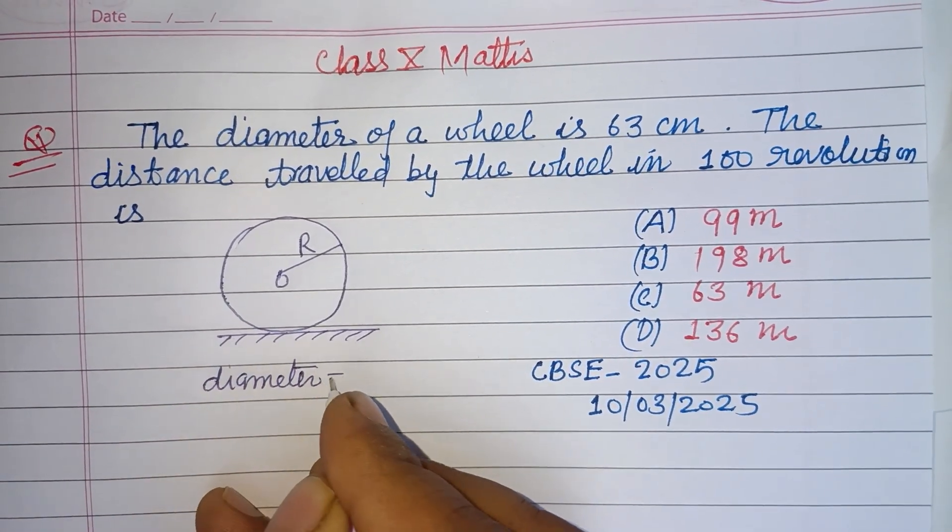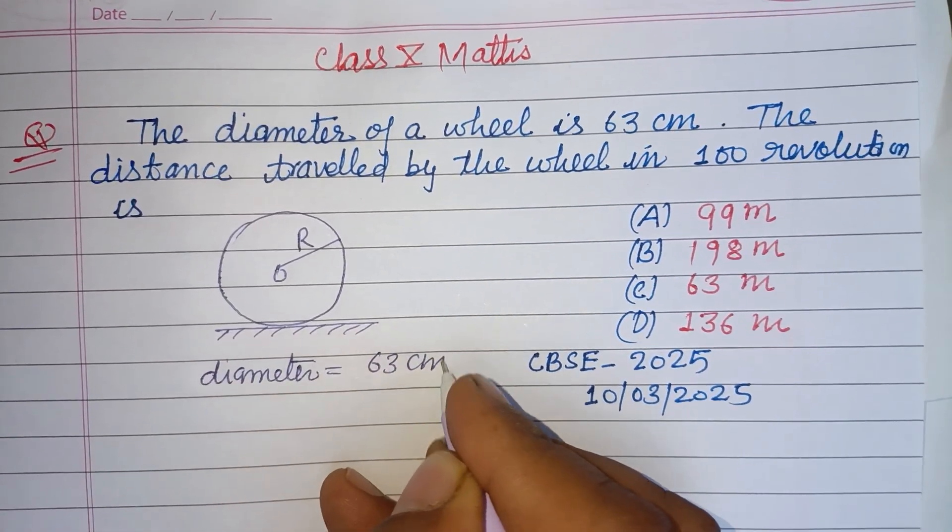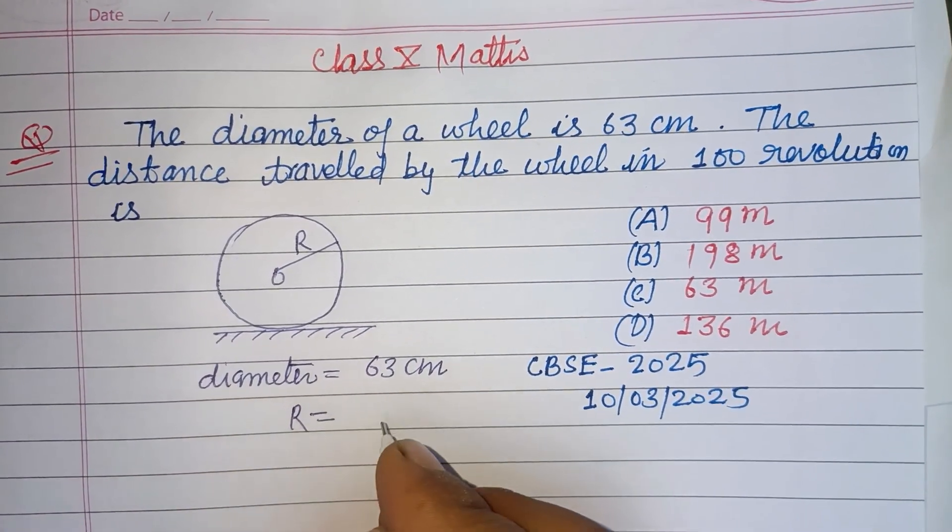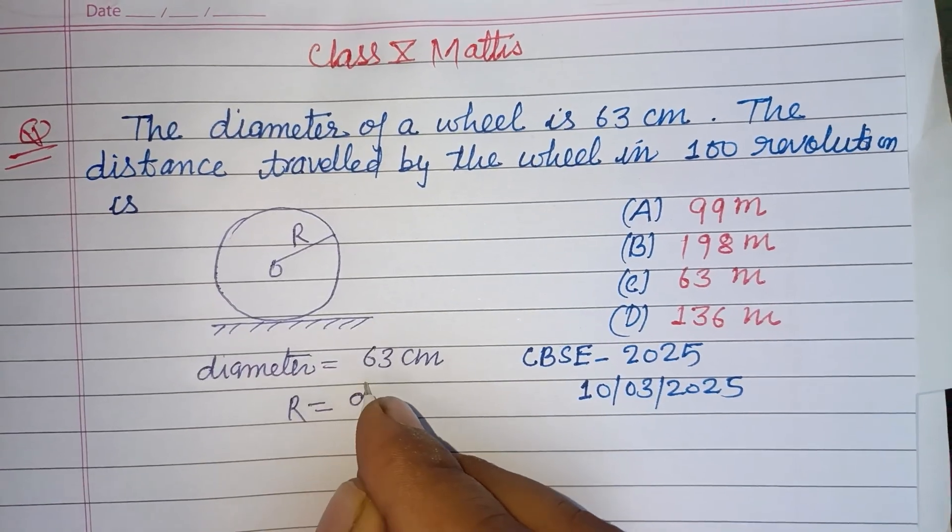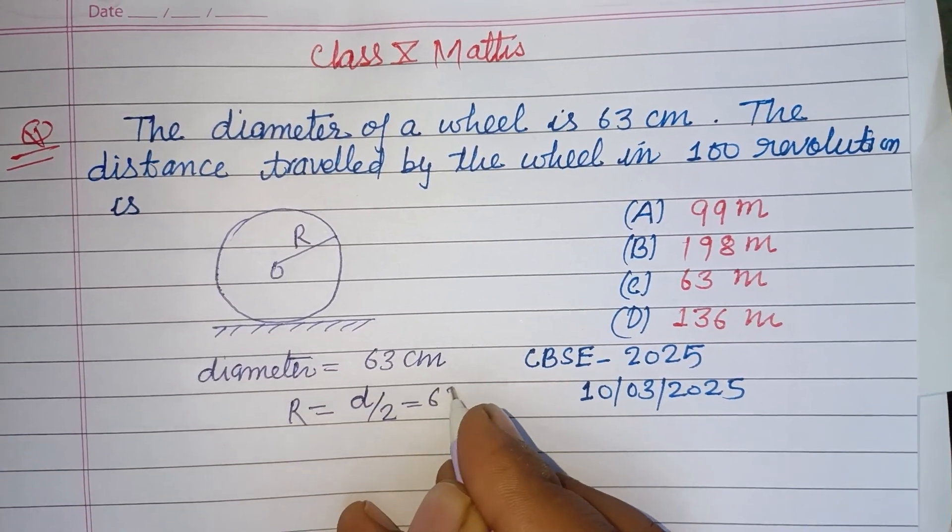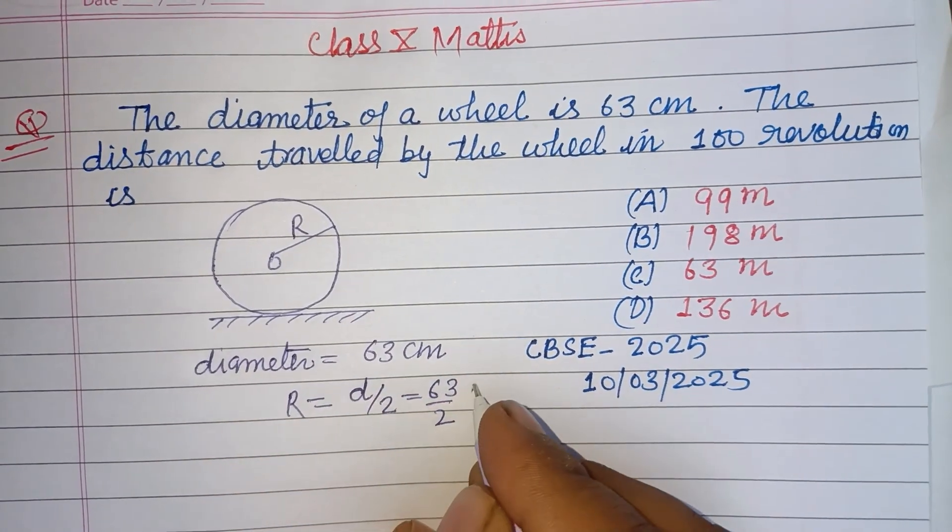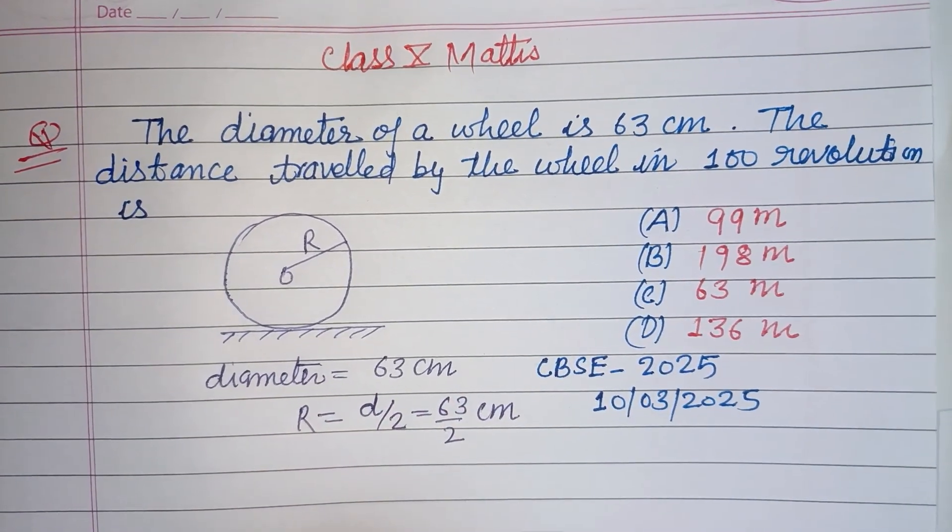Therefore, radius of the wheel equals diameter by 2, so 63 by 2 centimeters.